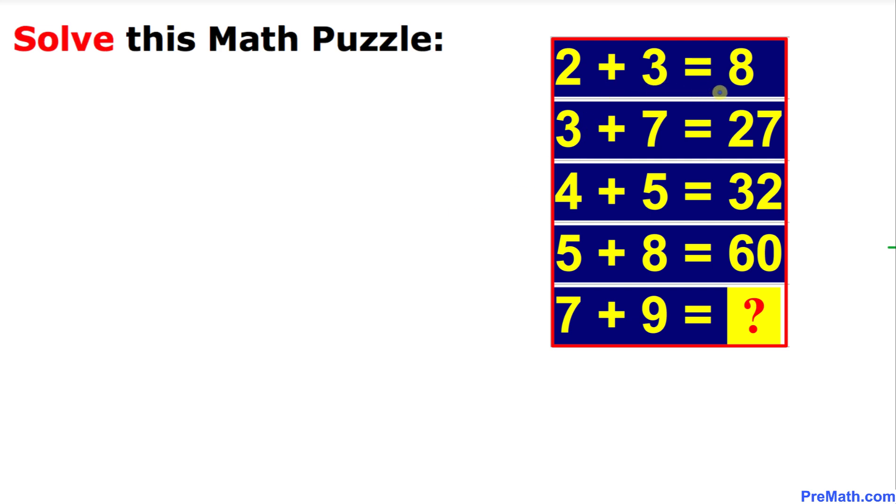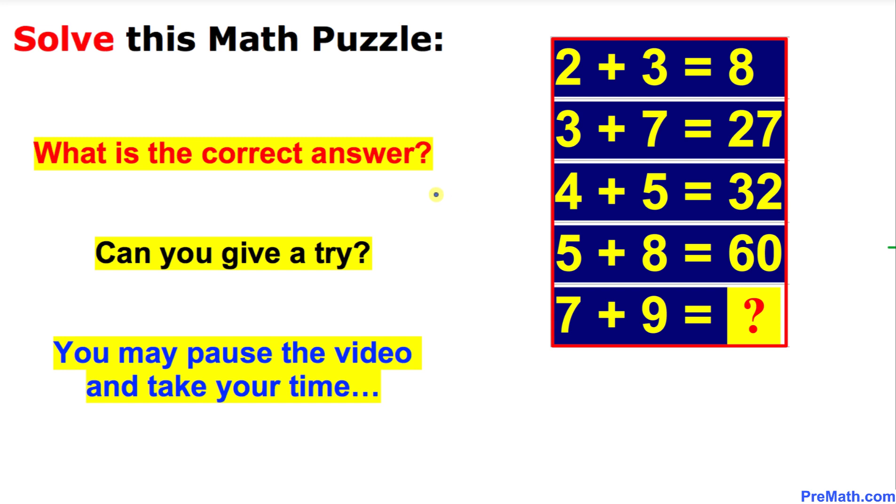2 plus 3 equals 8. 3 plus 7 equals 27. 4 plus 5 equals 32. 5 plus 8 equals 60. Then what is going to be the answer for 7 plus 9? So what is the correct answer?